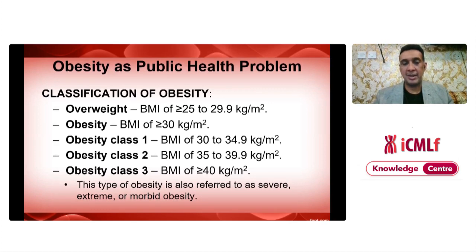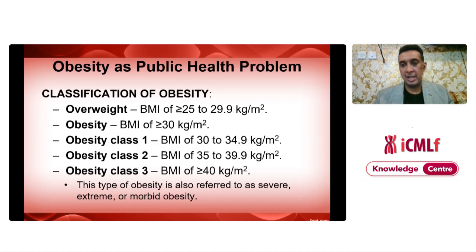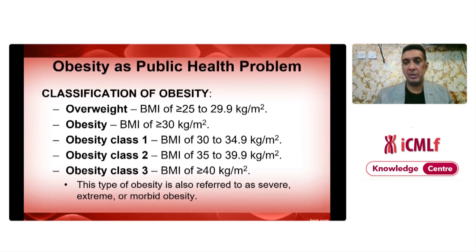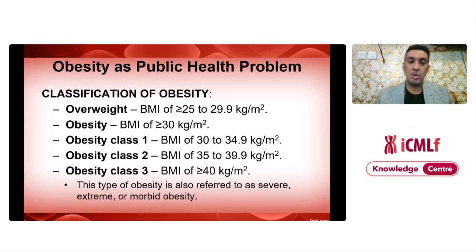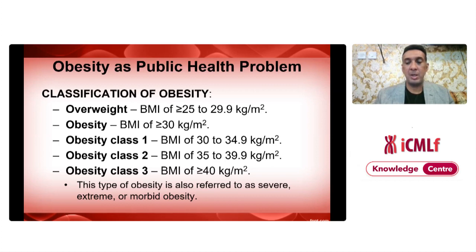If you are obese, there are classes for obesity: class 1, class 2, and class 3. A BMI of 30 to 34.9 is class 1, 35 to 39.9 is class 2, and a BMI of 40 or above is class 3, also referred to as severe, extreme, or morbid obesity.